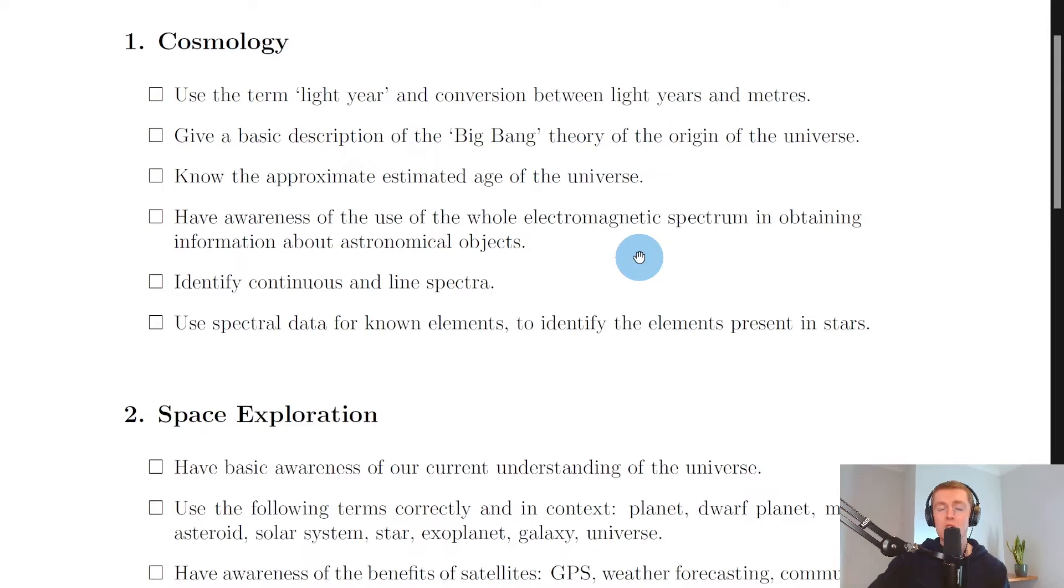Or you could think about telescopes for each type of electromagnetic radiation. So remember, there are telescopes for every type of EM radiation: radio telescopes to detect radio waves, microwave telescopes to detect microwaves, gamma ray telescopes to detect gamma rays, and so on.